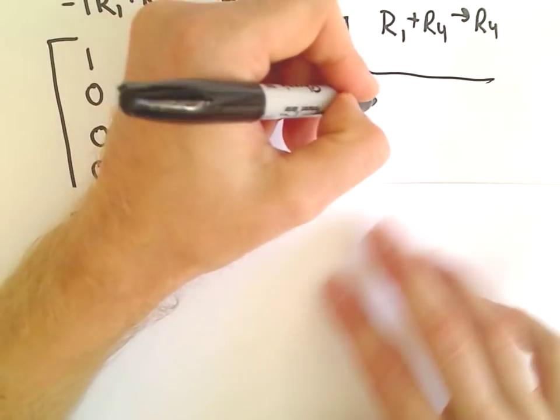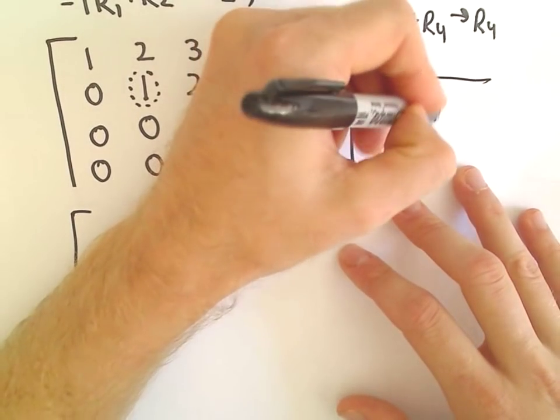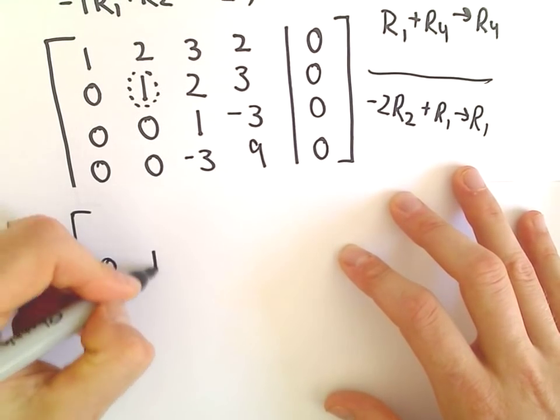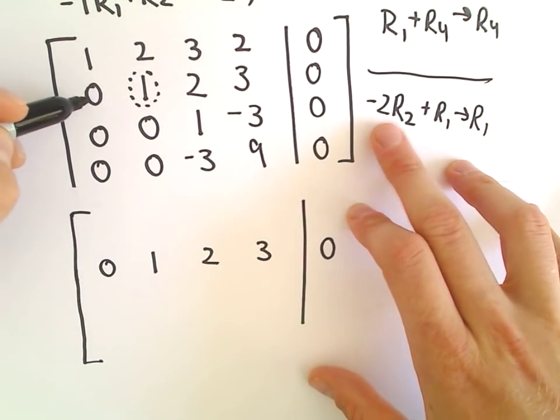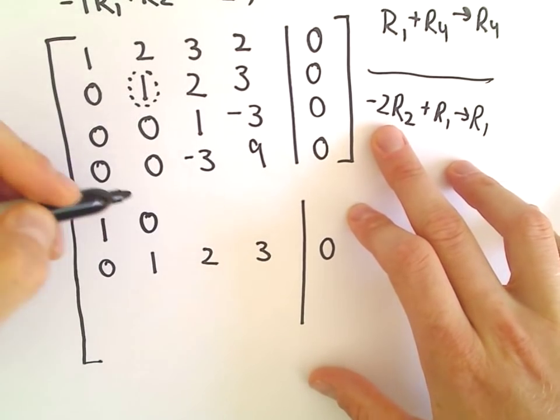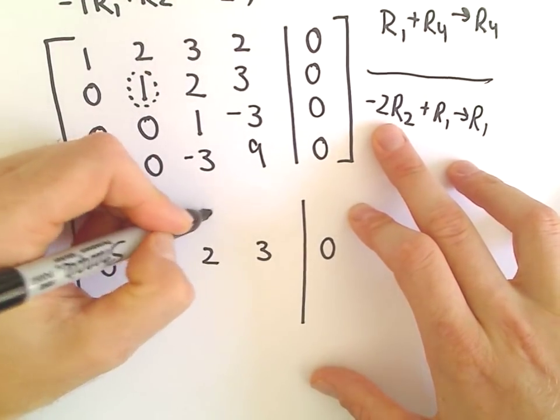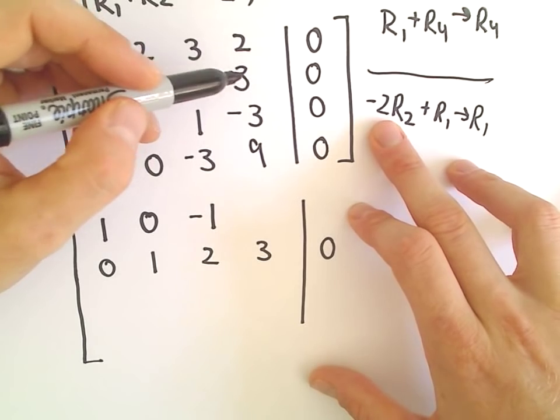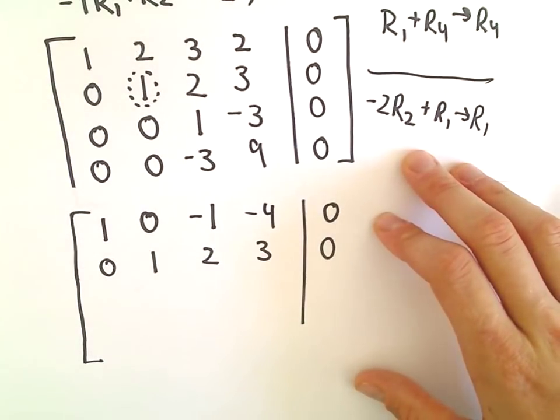I think we can simply take negative 2 times our row 2, add that to row 1, and that's going to give us our new row 1. So I'm going to go ahead and jot down my second row because I'm not doing anything with it. So negative 2 times 0 plus 1 is 1. Negative 2 times 1 is negative 2 plus 2 is 0. Negative 2 times 2 is negative 4. Negative 4 plus 3 will be negative 1. Negative 2 times 3 is negative 6. Negative 6 plus 2 is going to give us negative 4. And then we still have our 0 left over.